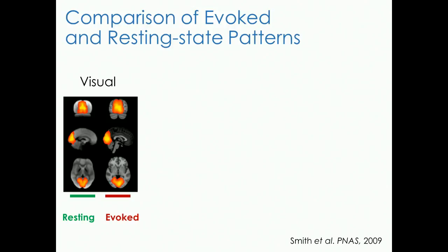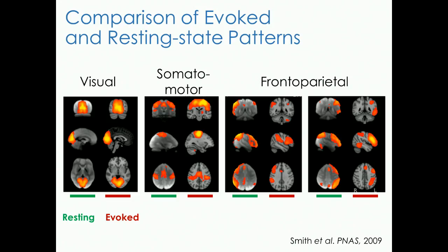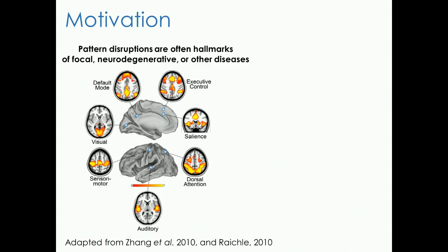The beauty of the technique is that these maps look very much like the task-based approaches. However, you can map out the full functional connectome in the brain in 10 to 15 minutes, which opens up a large variety of patient populations incapable of performing tasks, such as infants and people under stroke. Our lab has been developing fMRI-like techniques using optical methods for applications in the mouse, since disruption of resting state networks is often a hallmark of CNS disease.